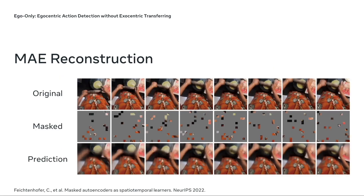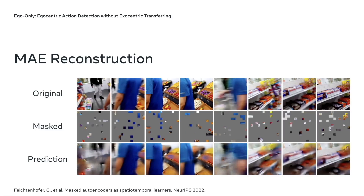To further understand how EgoOnly learns, we visualize some MAE reconstruction results. The first row shows the original video of a person flattening dough with a rolling pin. The second row visualizes the masked video with the default masking ratio of 90% — we can barely see the action. In the last row, we show the prediction from video MAE that reconstructs the original action reasonably well. Furthermore, we found that due to the head motion in egocentric videos, MAE may have learned spatial-temporal correspondence, as it can reconstruct the scene with good temporal consistency.